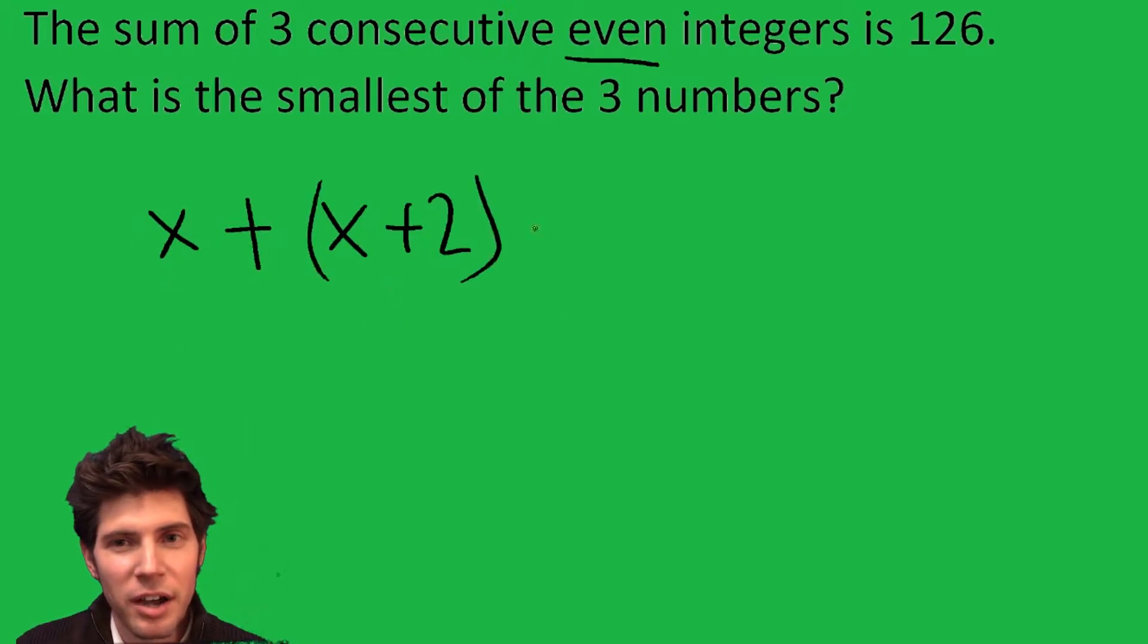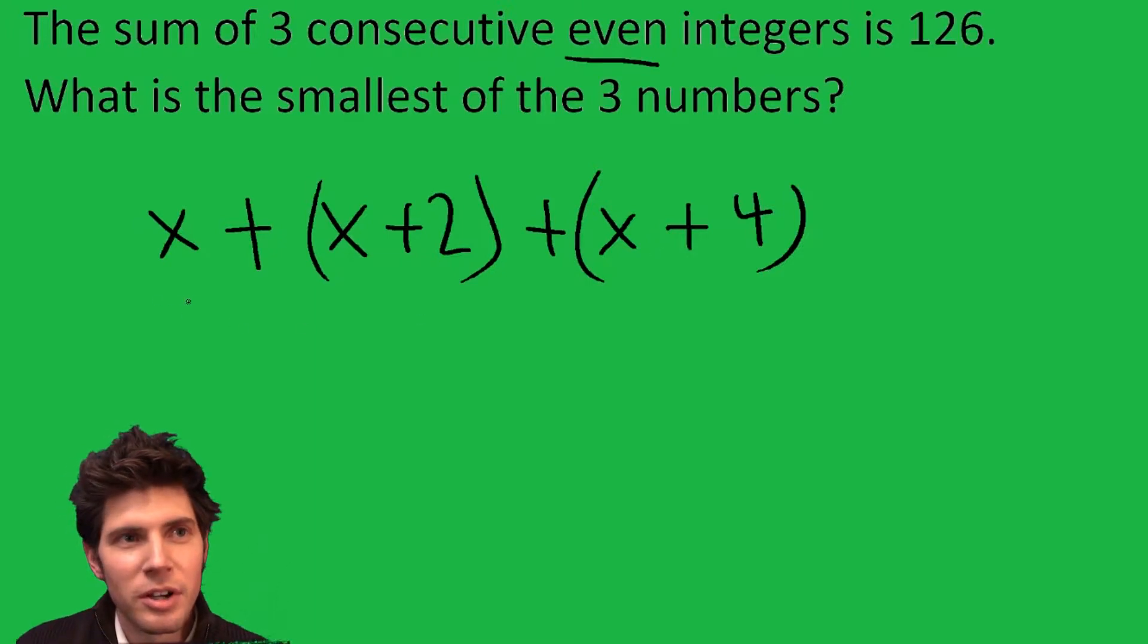So x plus 2 plus 2, which is x plus 4, is the next even number after x plus 2. So here's our three consecutive even integers, and the sum of them is 126.